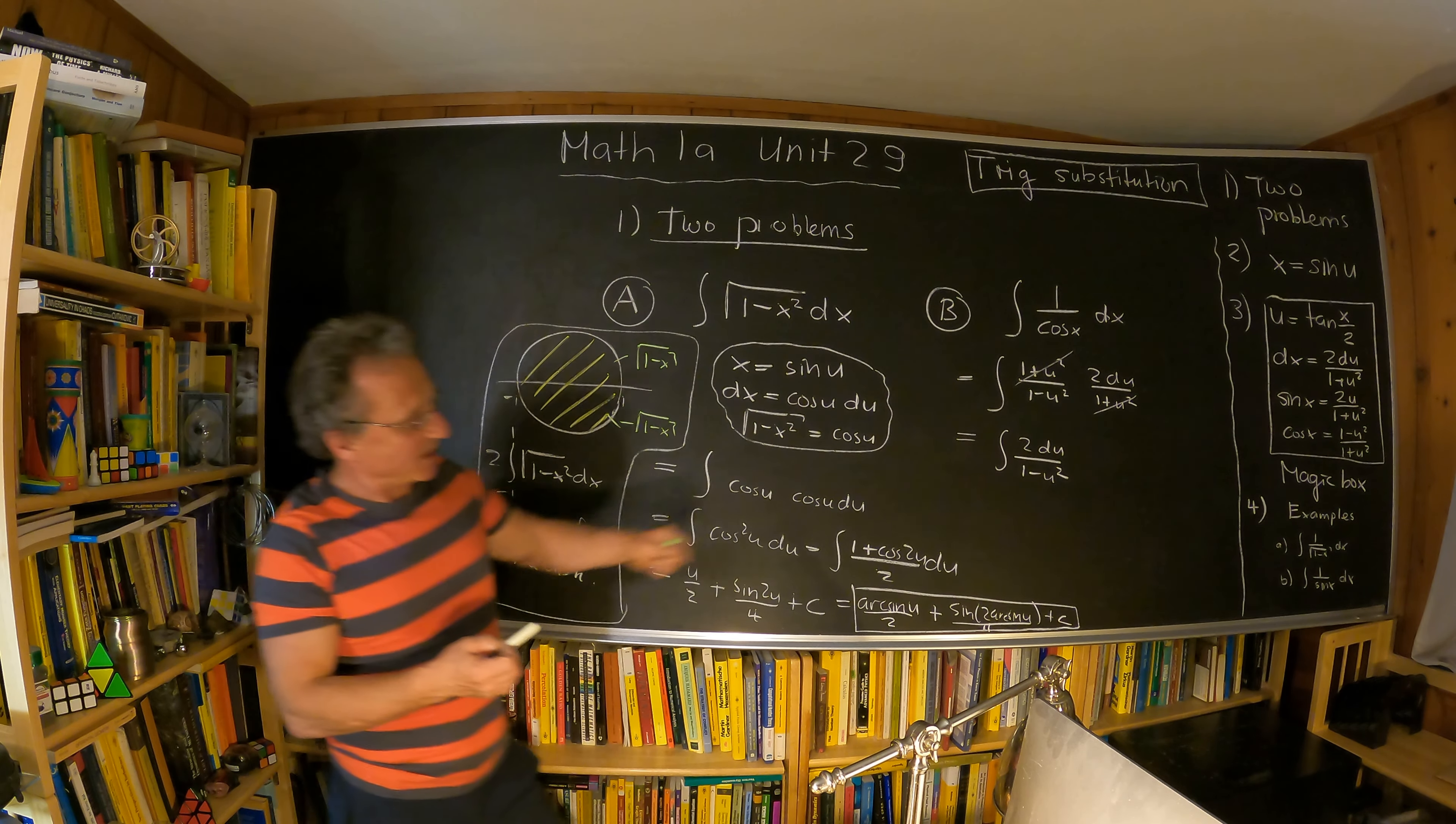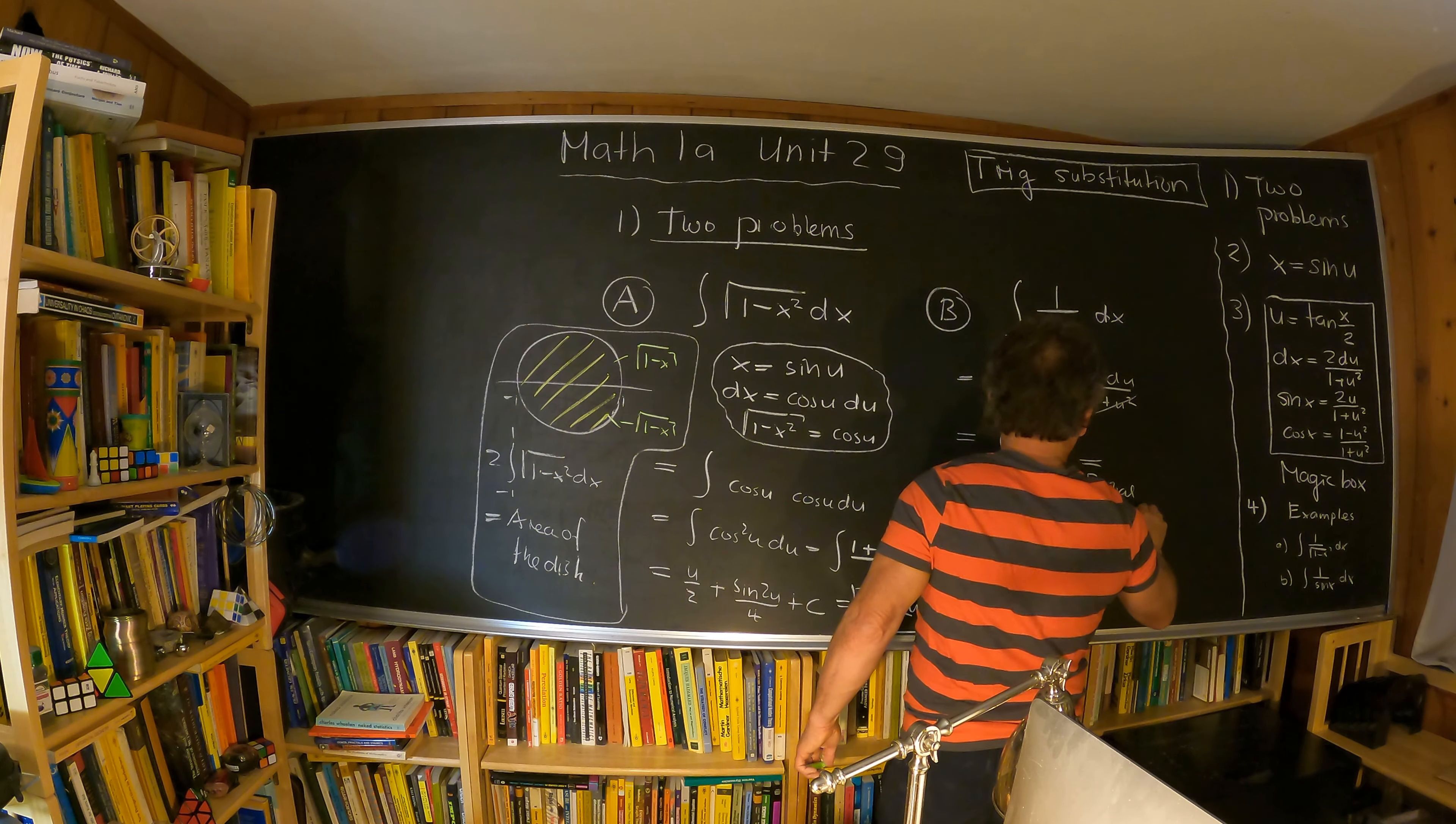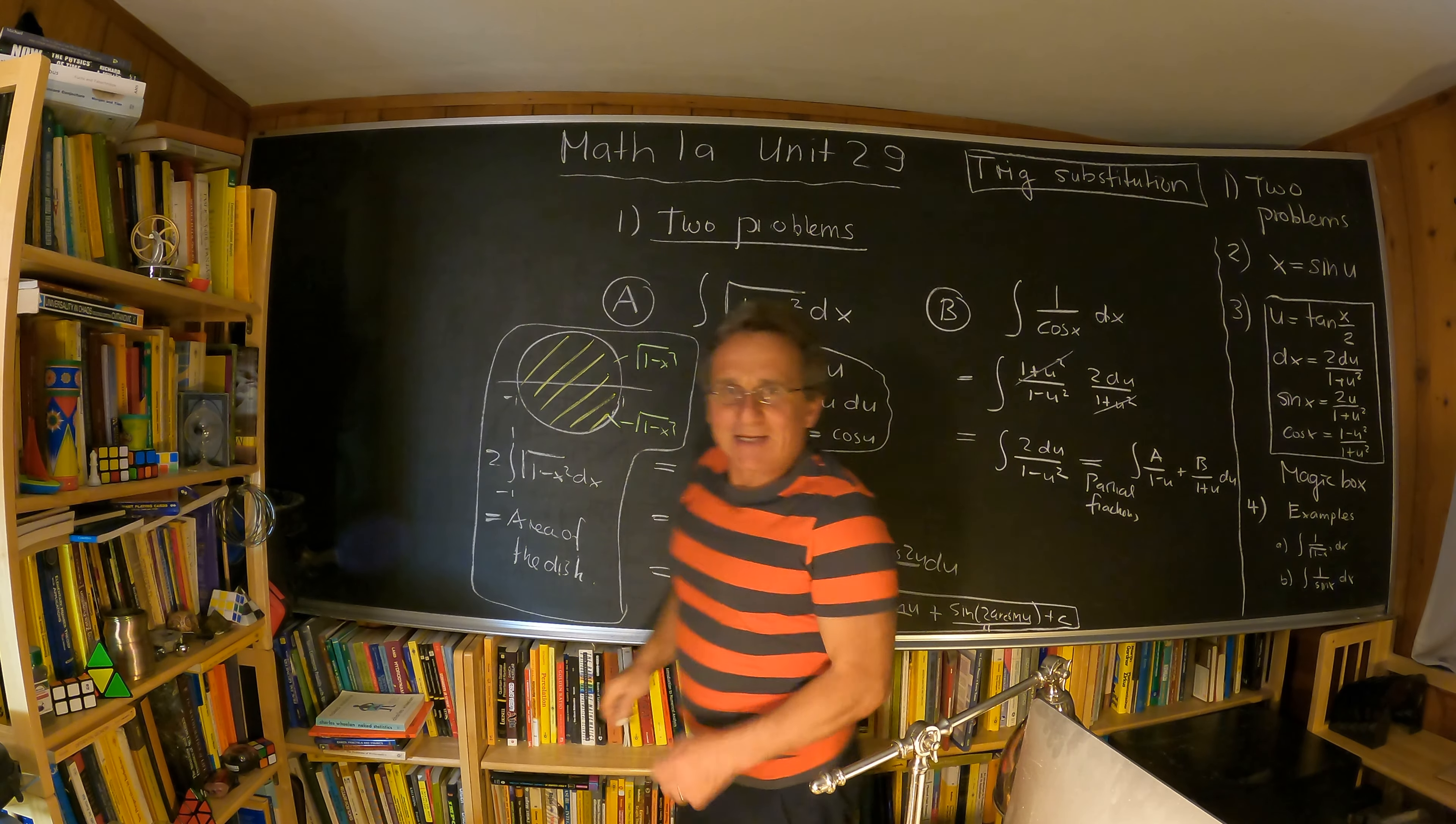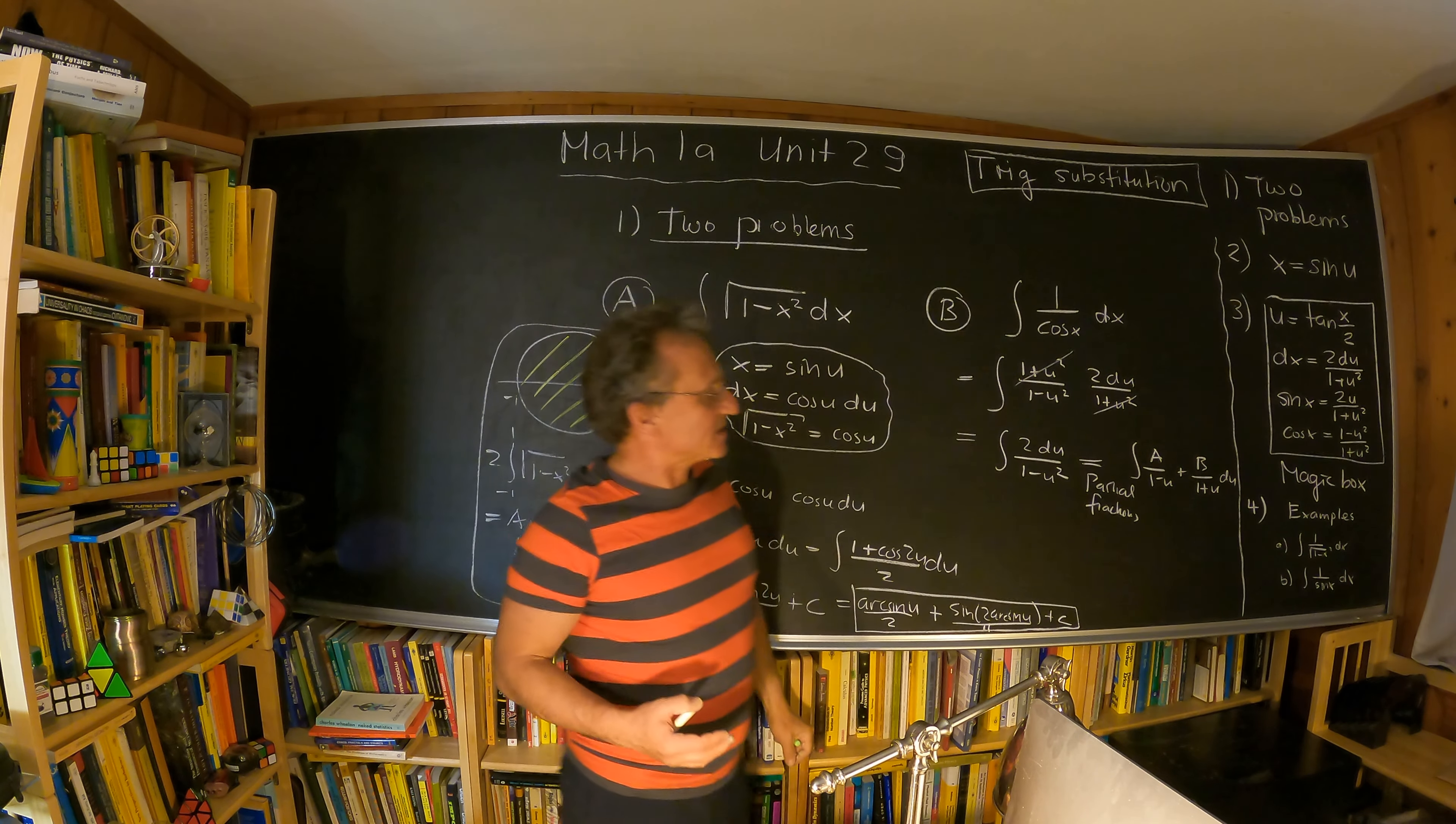So that's pretty cool because we can do this with partial fractions. You have just seen that last week. So with partial fractions, this is the integral a over 1 minus u plus b over 1 plus u. And I'm still impressed from the class last week when we discussed these partial fractions.